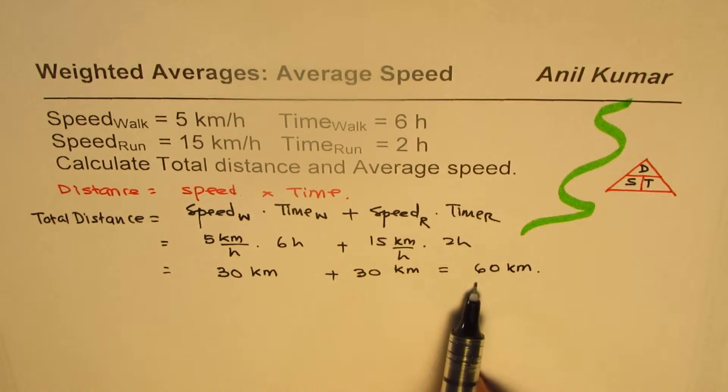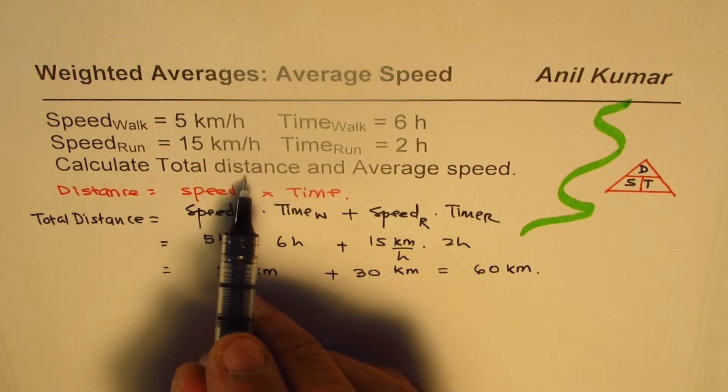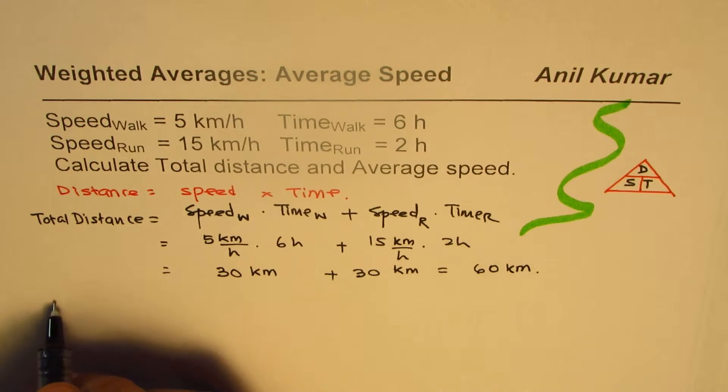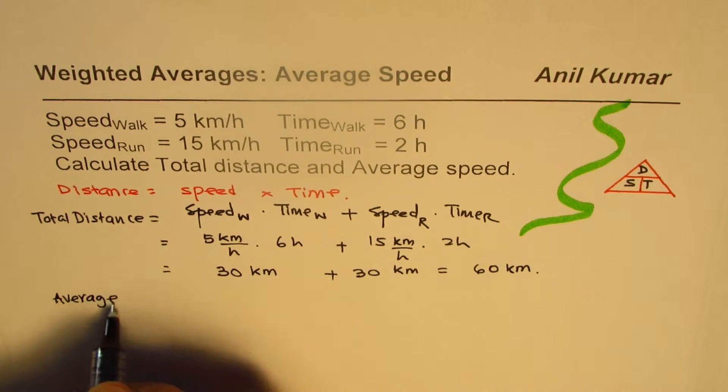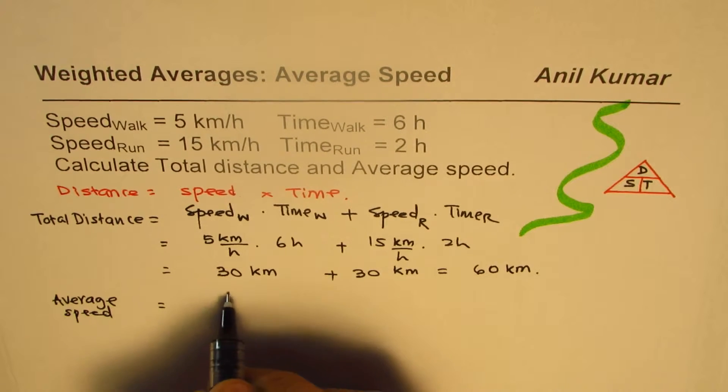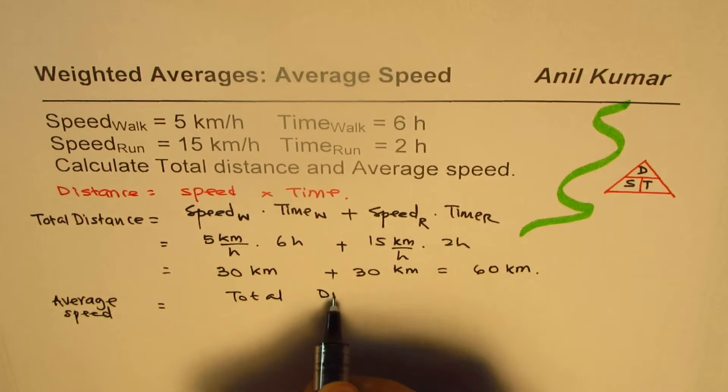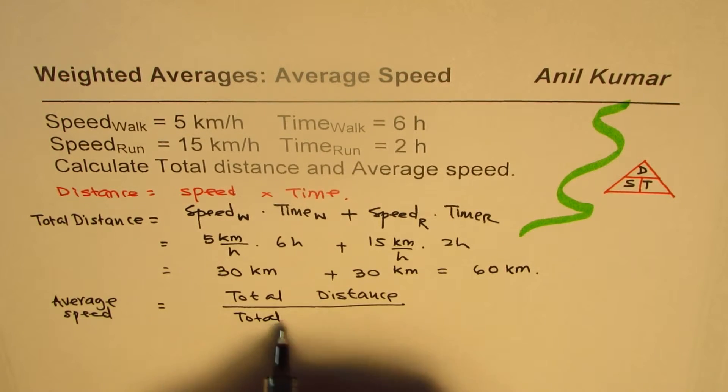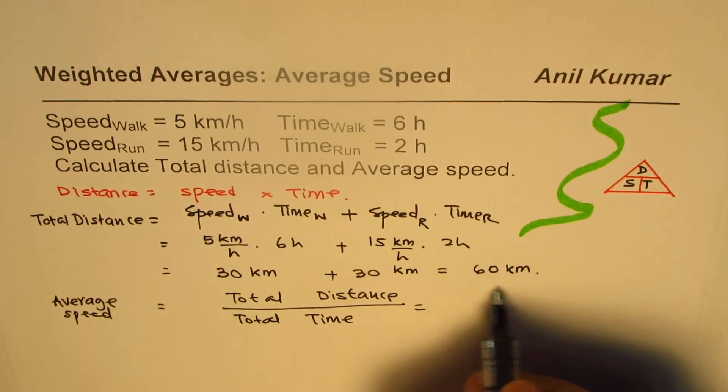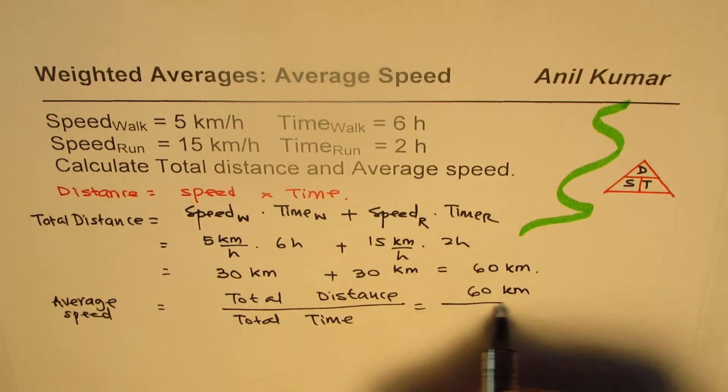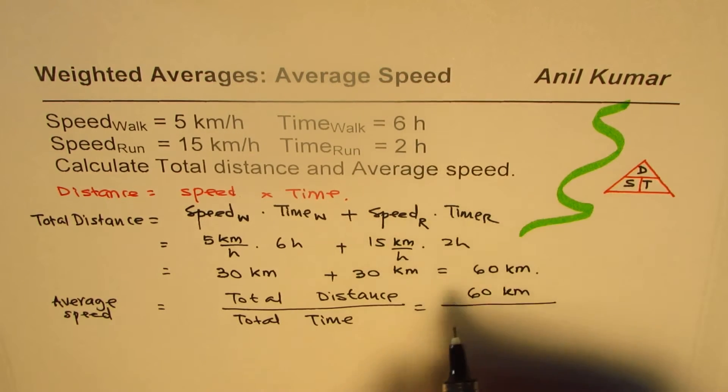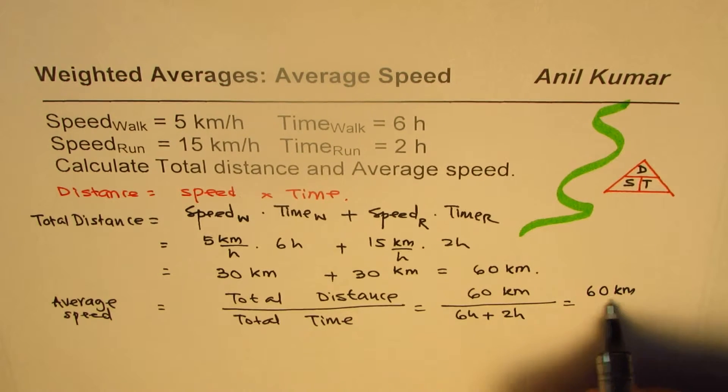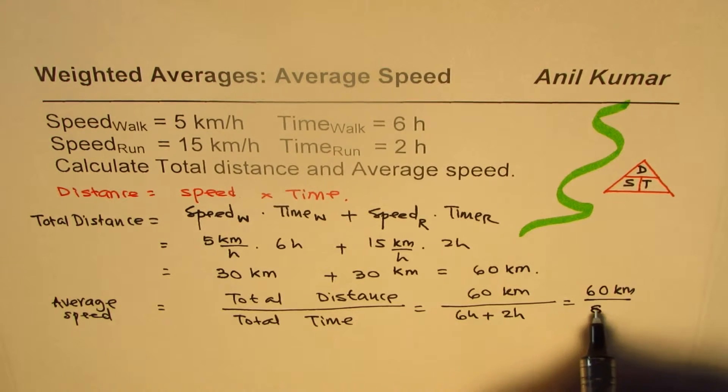Now 60 kilometers is the distance traveled by the person. The second part here is find the average speed. Average speed is total distance divided by total time. In this case, total distance is 60 kilometers, and total time is 6 hours plus 2 hours, so that is 8.